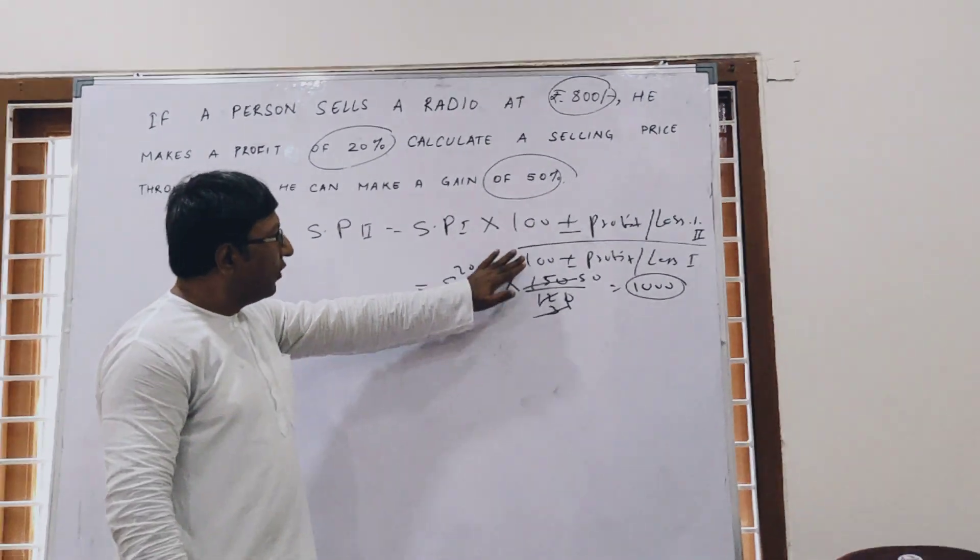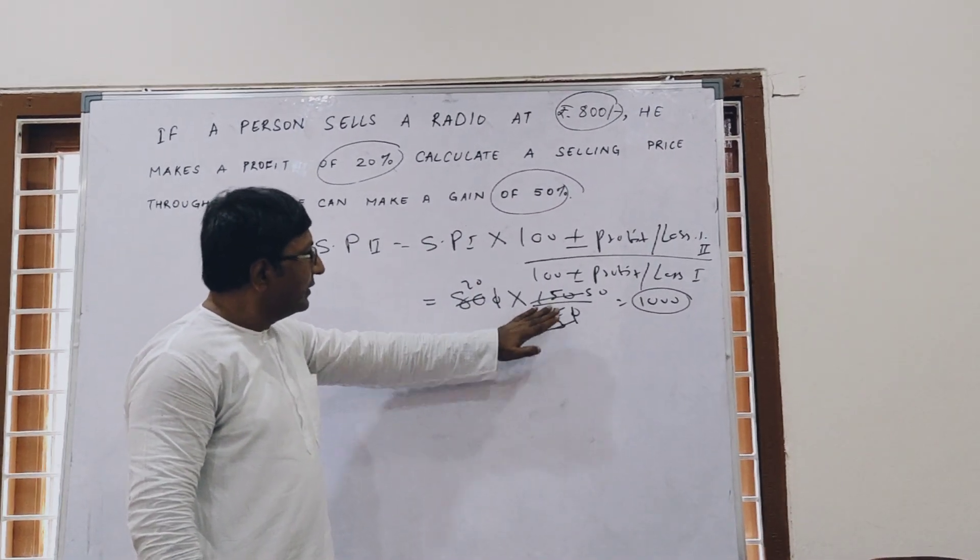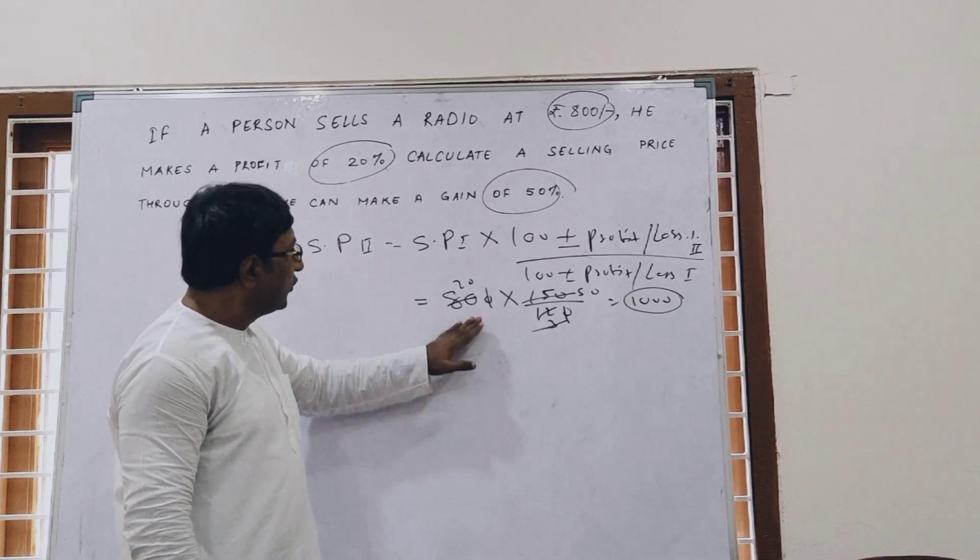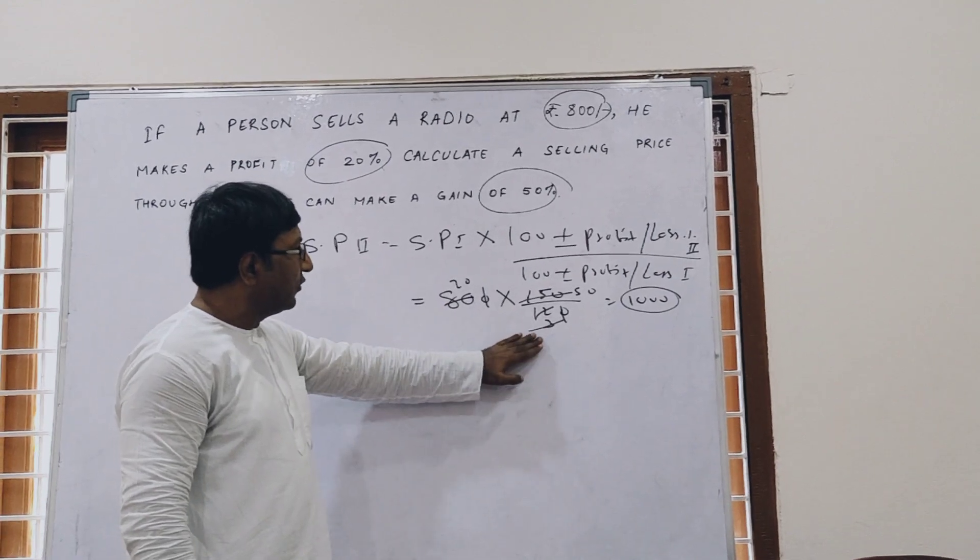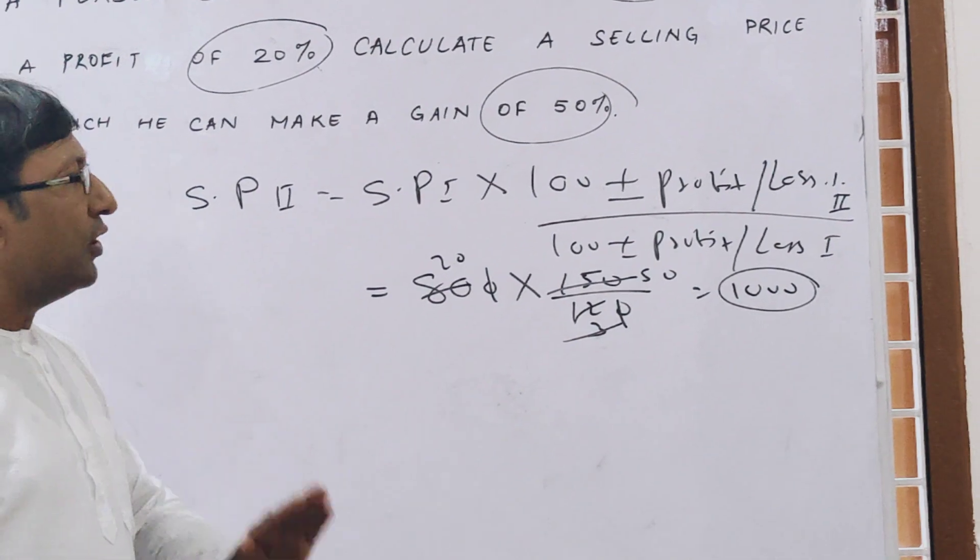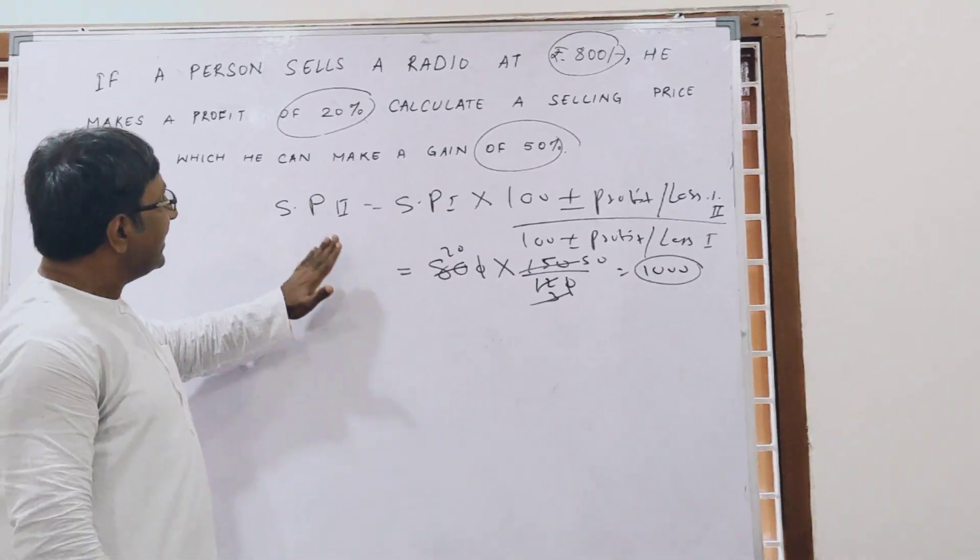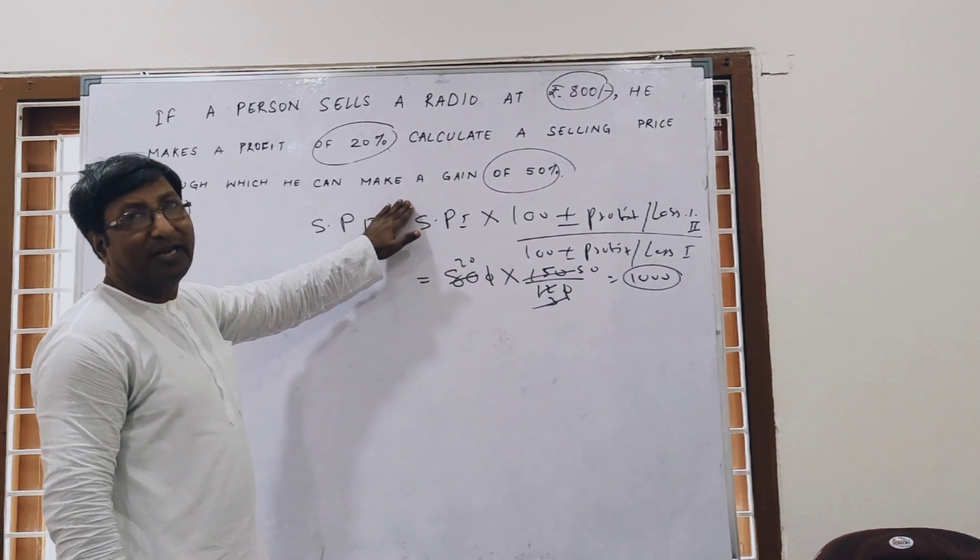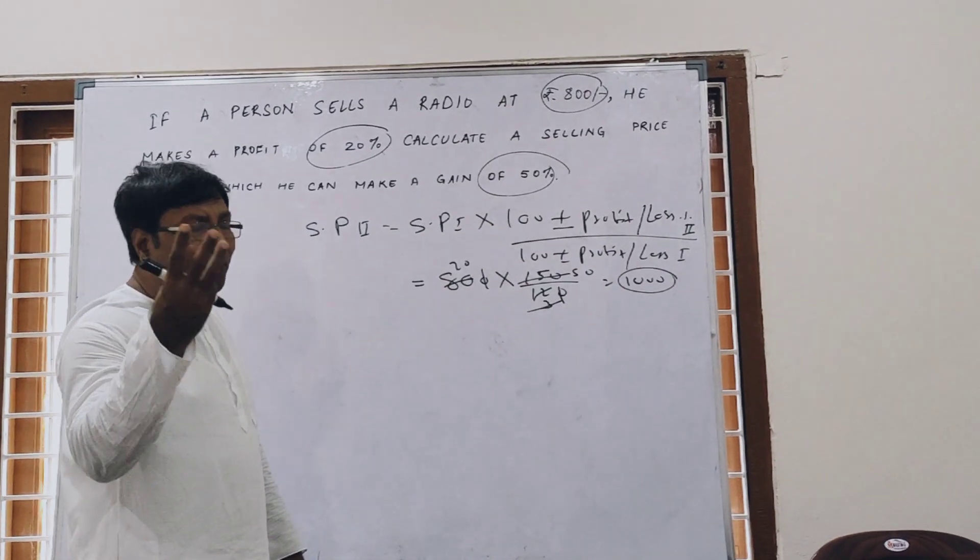So 1000 is the correct answer. 800 into 150 by 120, zero cancels out, 4 into 8 is 2, 4 into 12 is 3, 3 into 50. So 50 into 20 is 1000. This question can be asked 3 or 4 ways.